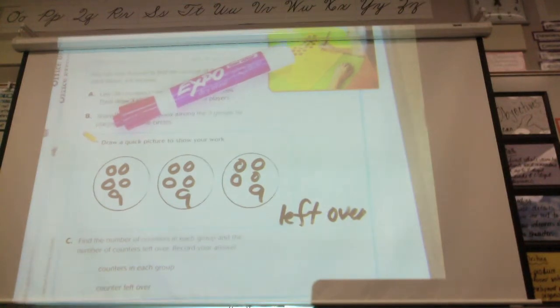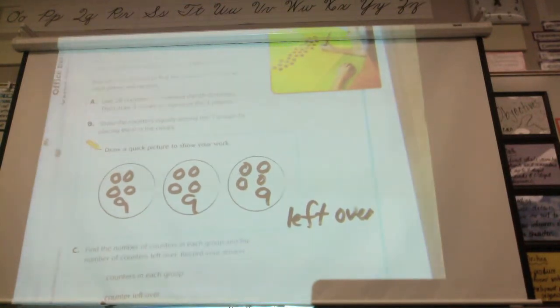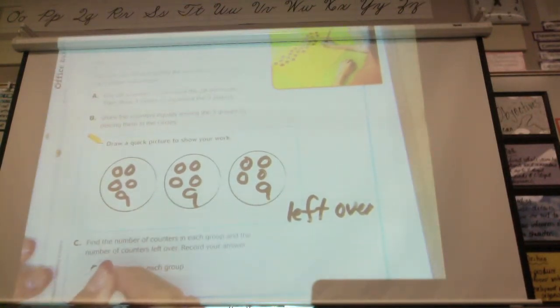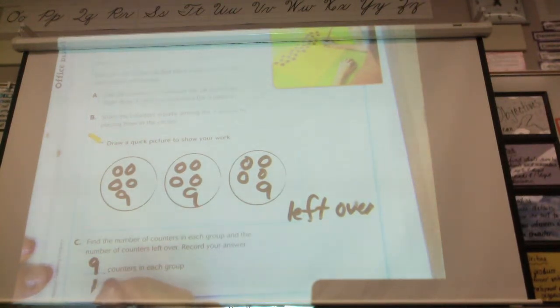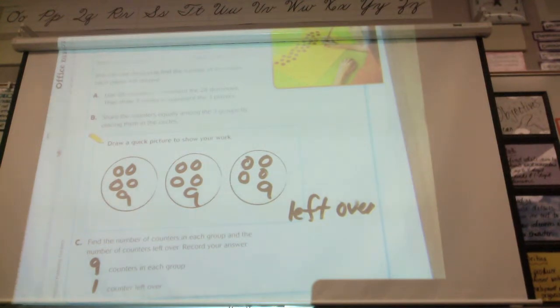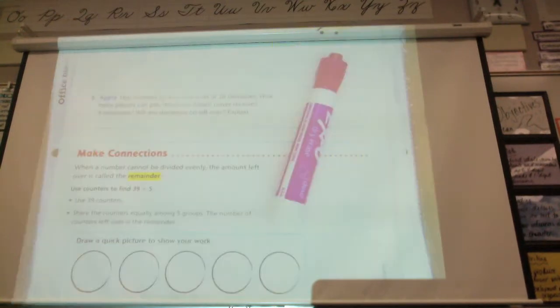If there's four leftover, you have enough to give everybody an extra one. Okay? So we should have nine in each group with one leftover. Correct? So down here at the bottom, it says, how many counters are in each group? How many were there in each group? Nine. Nine. And how many were left over? One. One. It's one. Not one. Okay. So go ahead and fill in your book. You don't have to do the circles because we already did those.